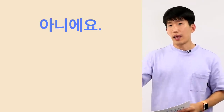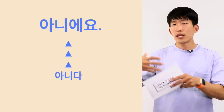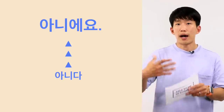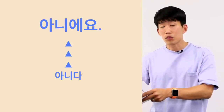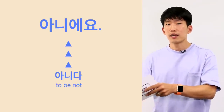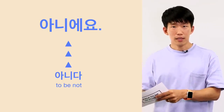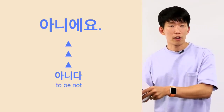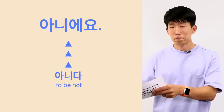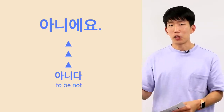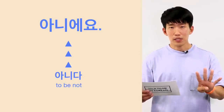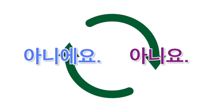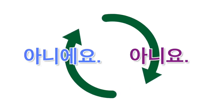Whereas 아니에요 is a conjugated form of the verb 아니다, which means 'to be not' — to be not something, to be not somewhere. 아니에요 — four syllables. So in certain cases, contexts, and situations, you can replace 아니요 with 아니에요 and it still works.